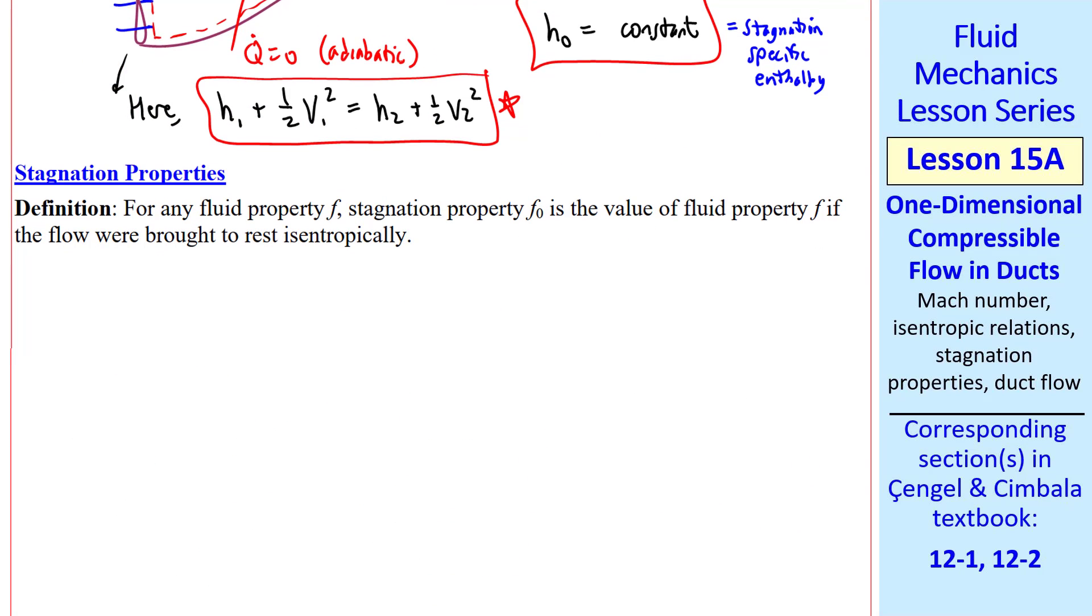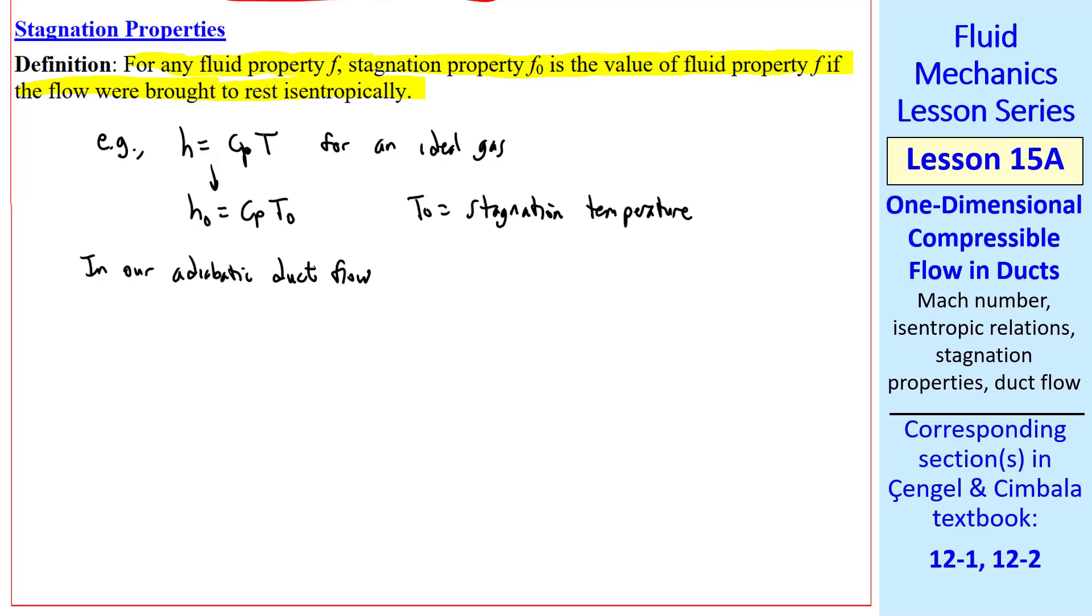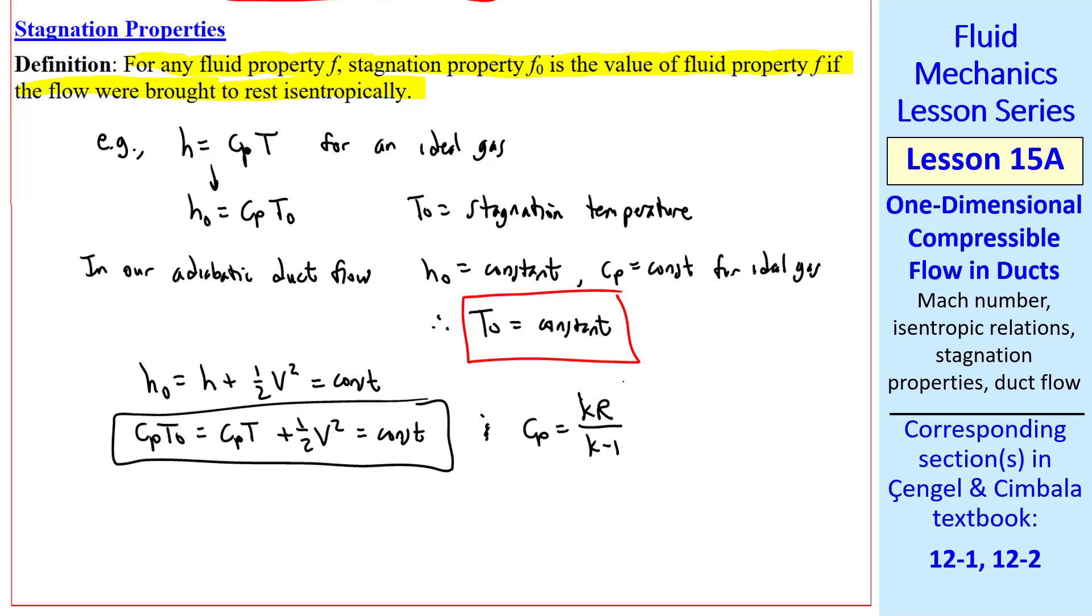Let's discuss these stagnation properties in more detail. For any fluid property F, stagnation property F0 is the value of fluid property F if the flow were brought to rest isentropically. We approximate H as CpT for an ideal gas, so H0 is Cp times T0, where T0 is the stagnation temperature. In our adiabatic duct flow, H0 is a constant and Cp is constant, therefore stagnation temperature is also constant.